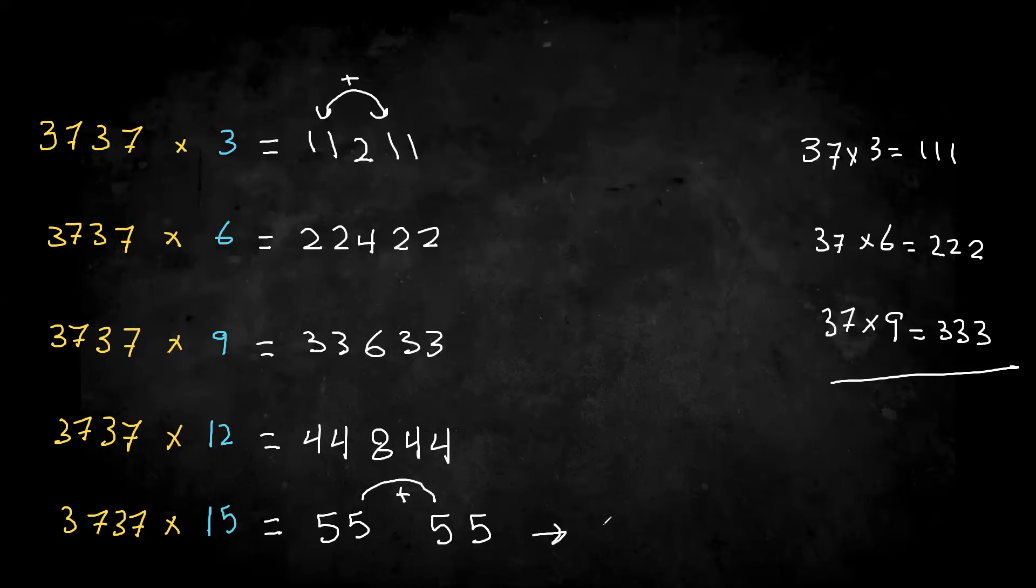what we're going to do is we're going to write the two fives on the right. And the 10, we put the 0 there, and the 1, we're going to add it to the 5 that's here. So the final answer will be 56055.